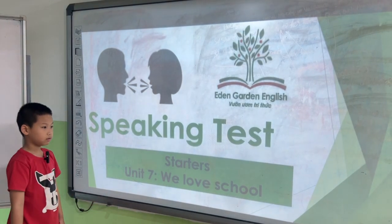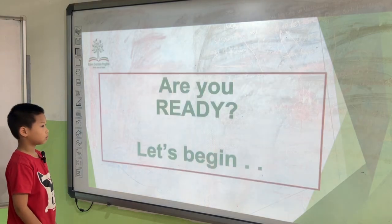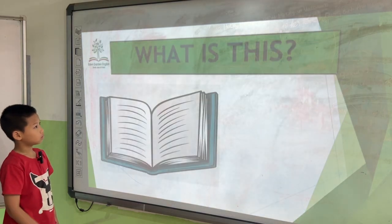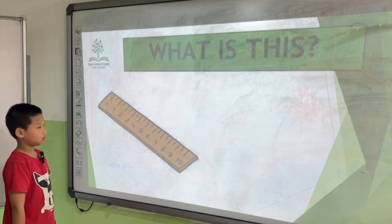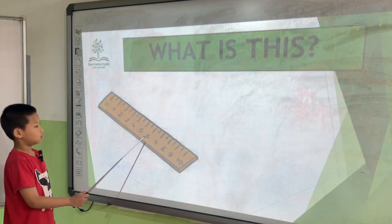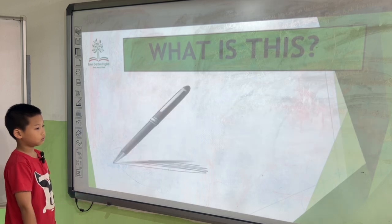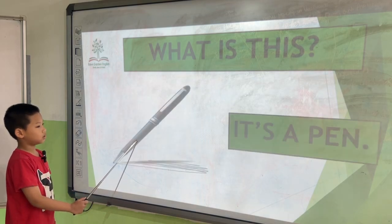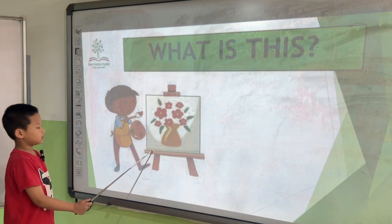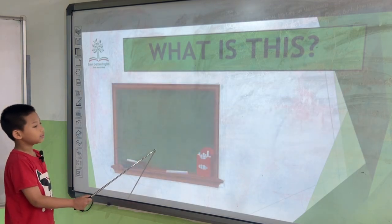Alright, Ken, are you ready? Yes. Let's start with our best school grades. What's this? This is a book. This is a ruler. This is a bear. This is a creature. This is a ball.